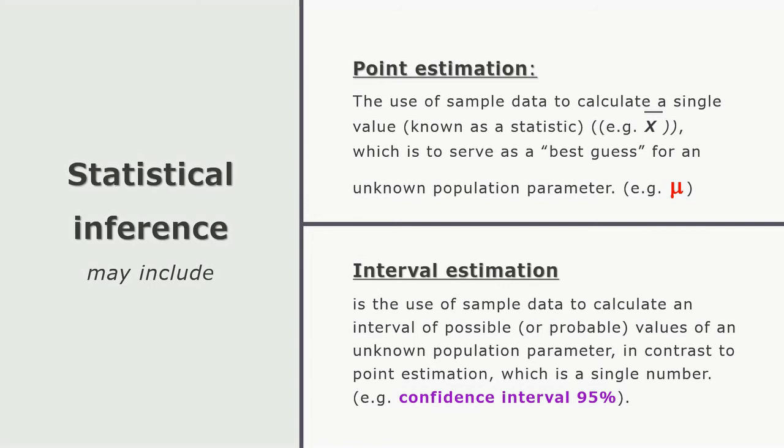Statistical inference can be a point estimation or interval estimation. In case of point estimation, from the sample data we calculate a single value, like the mean, which will serve as the best guess for the unknown parameter of the population, the μ of the population.